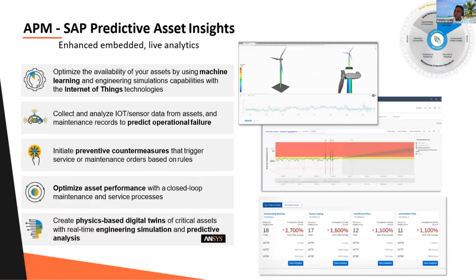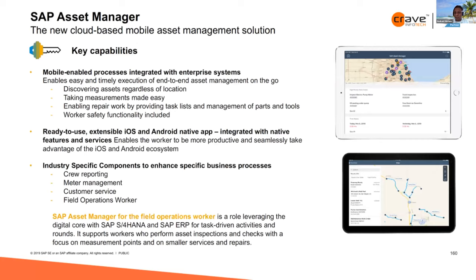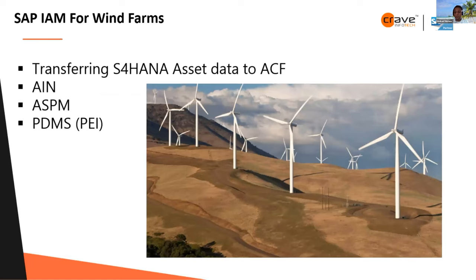APM, or SAP Predictive Asset Insights, is what we are going to discuss. Shiva will very shortly talk about how you can do the ASPM part for a wind turbine. SAP Asset Manager is SAP's cloud-based mobile solution — it is the next-generation replacement for Work Manager, with good functionality in newer versions including supervisor, inventory management, meter management, customer service, and field operations work.